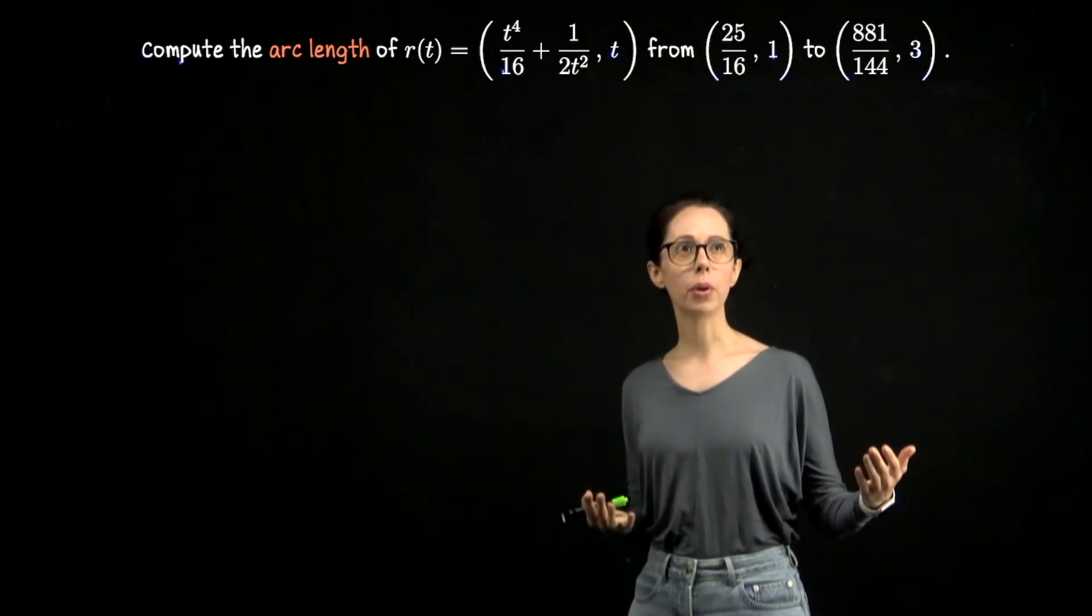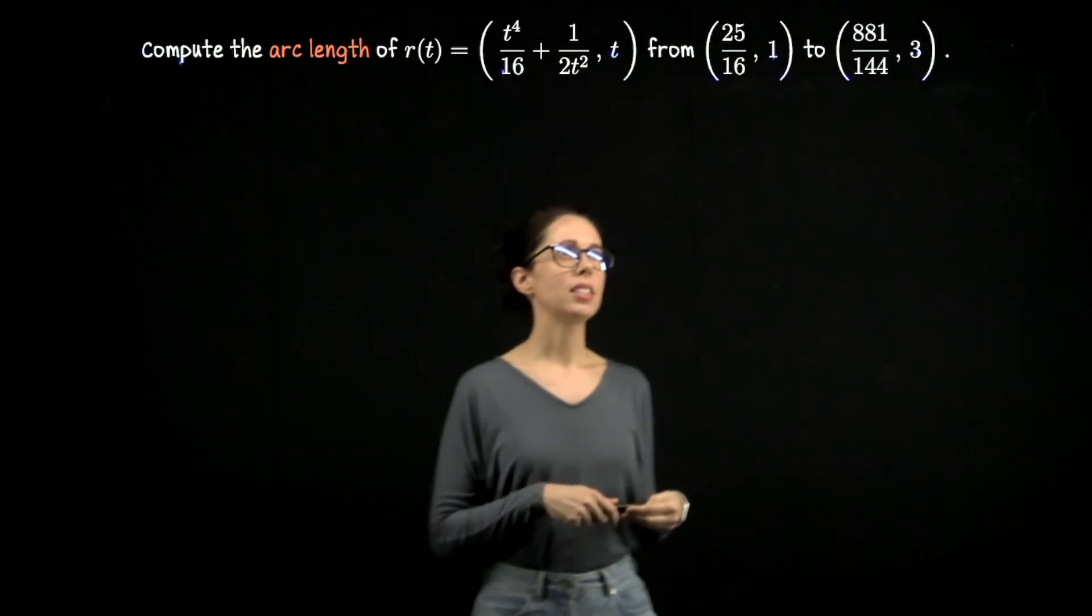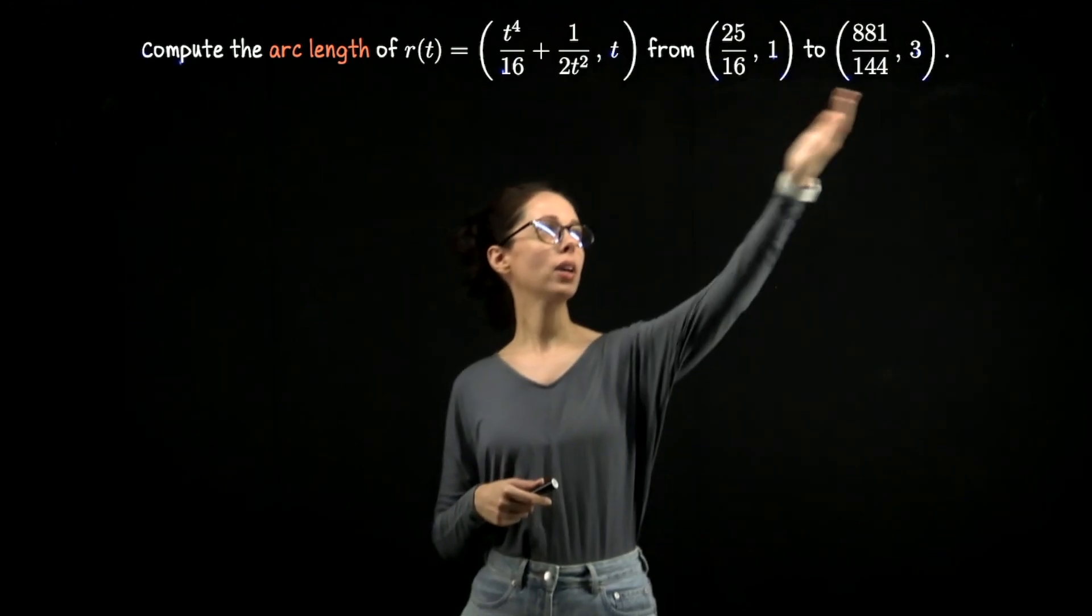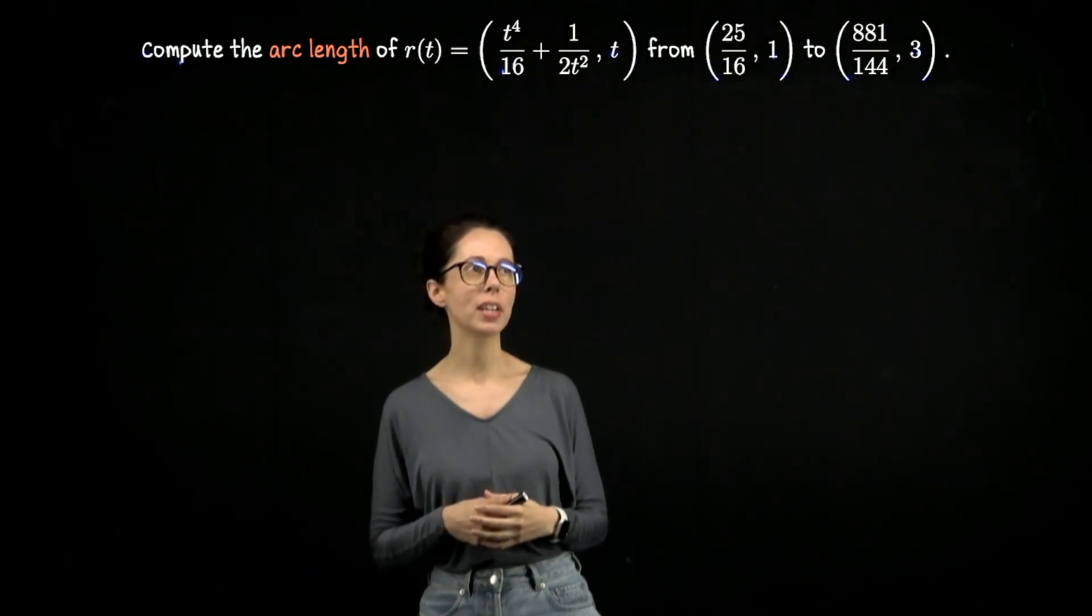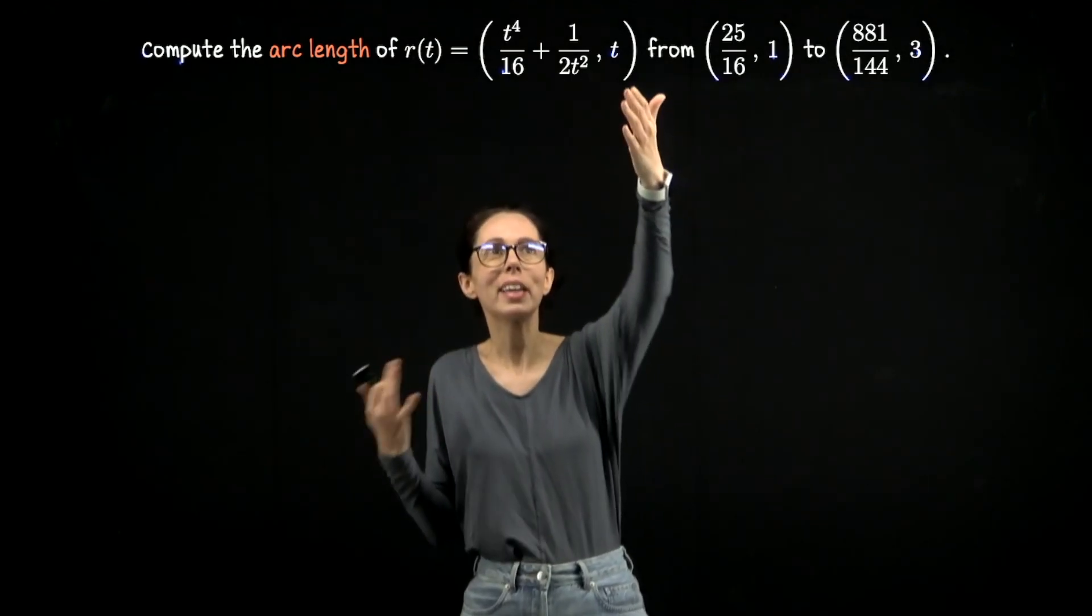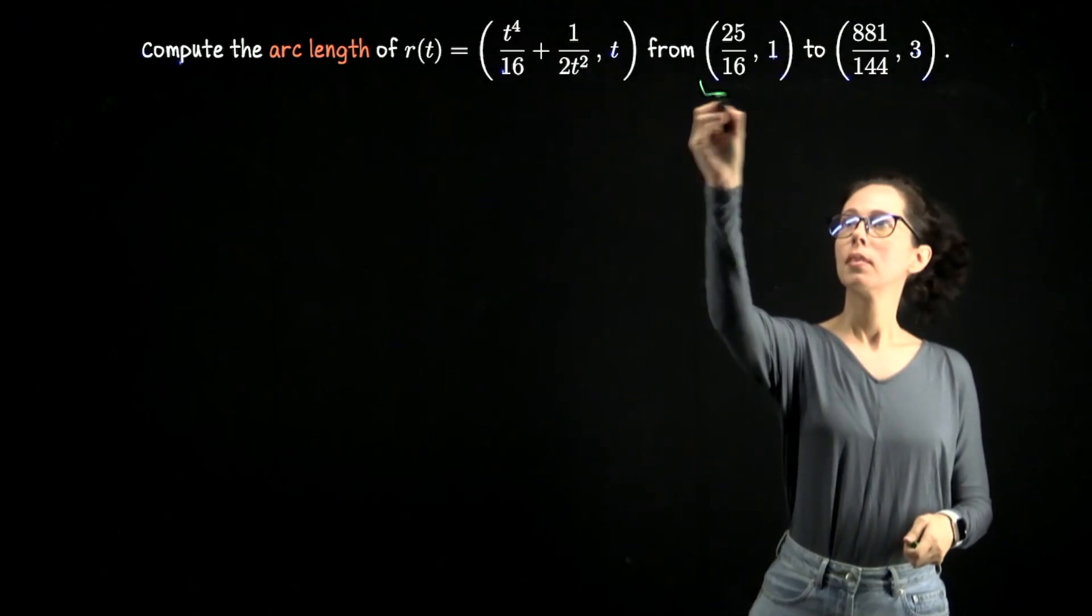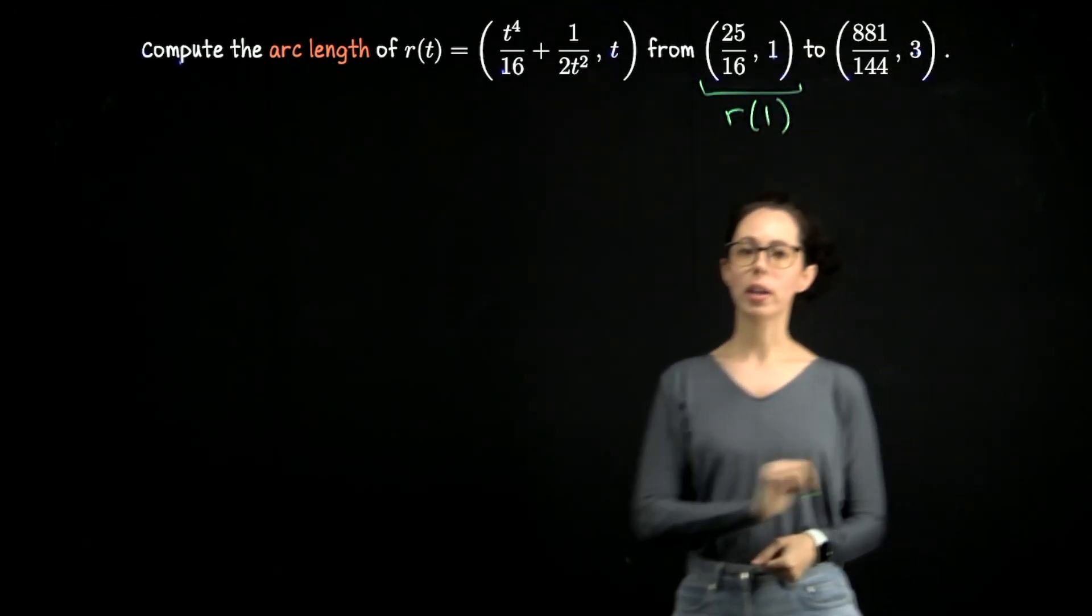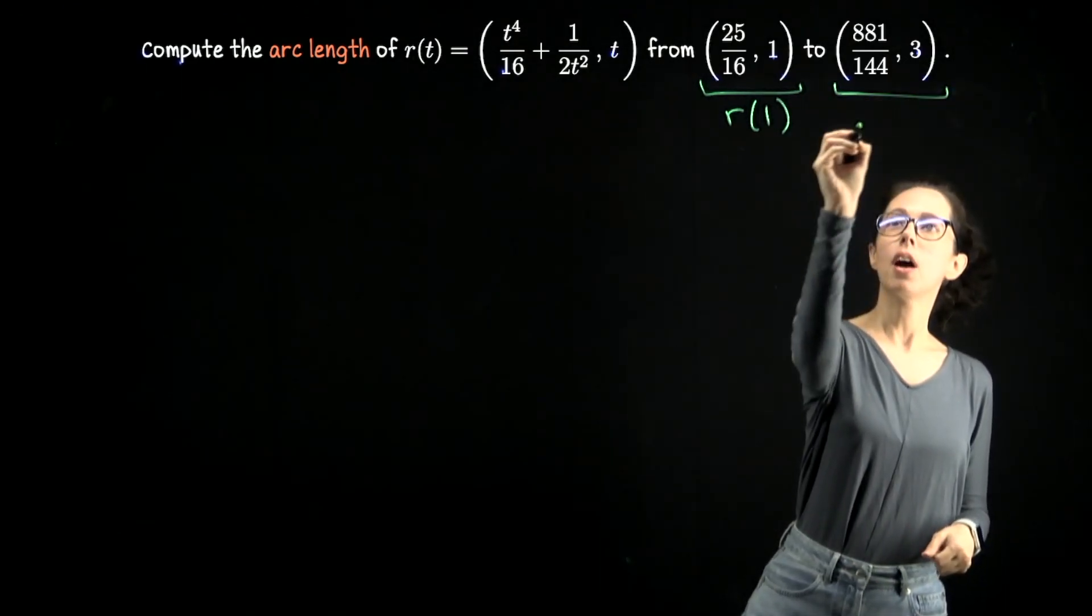We will be computing the length of this curve as it travels from this point to this one. That's going to give us the domain for our parameter t, and if you compare the y coordinates of these points to our description for y as a function of time, you'll recognize that since y is t, when y is 1, t is 1. So we can think of this as the point r of 1 on our curve, and this one is r of 3.